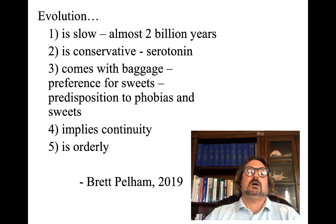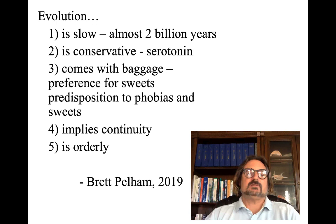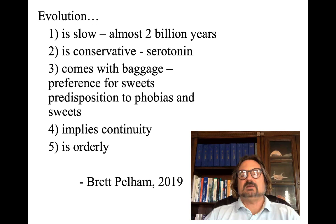Evolution also comes with baggage. For instance, it was once adaptive to prefer sweet food, but these days sweets are not so healthy. Also, predispositions to phobias — the things we have phobias about are often much less threatening than things like motorcycles or cigarettes. Nobody has a phobia of those, but when it comes to scorpions or poisonous snakes, even where few poisonous snakes exist. Evolution implies continuity and is very orderly, according to Pelham.